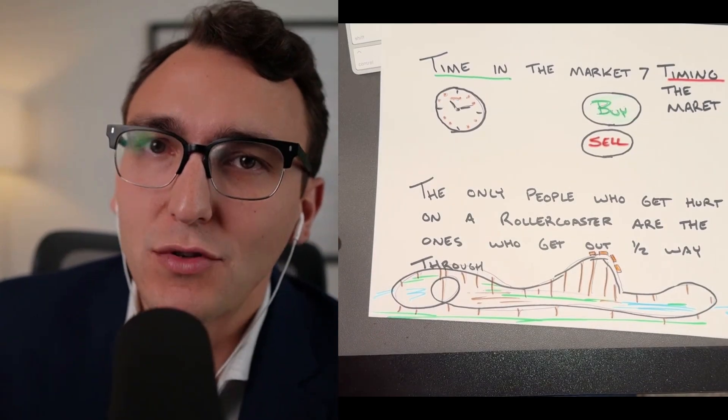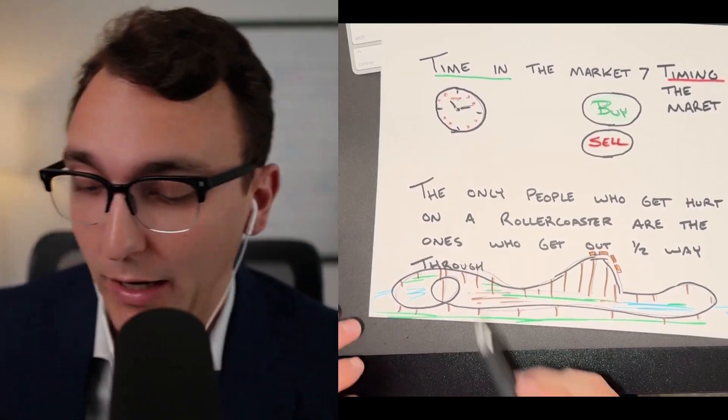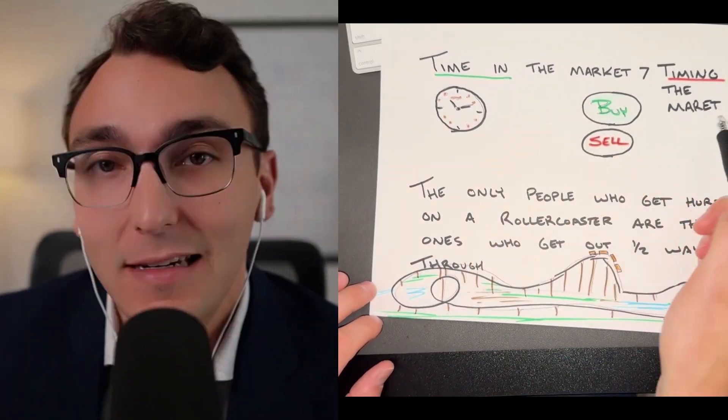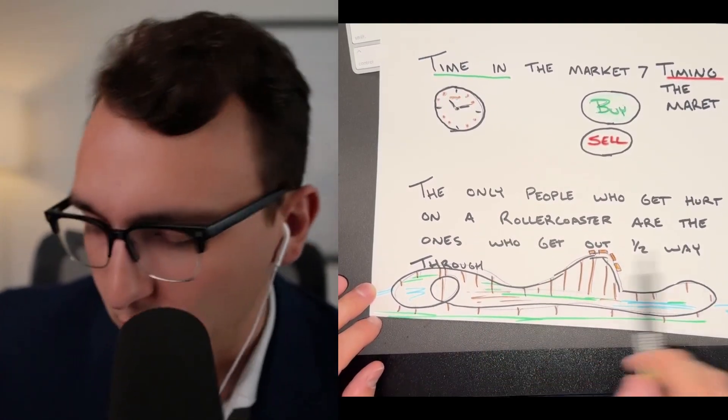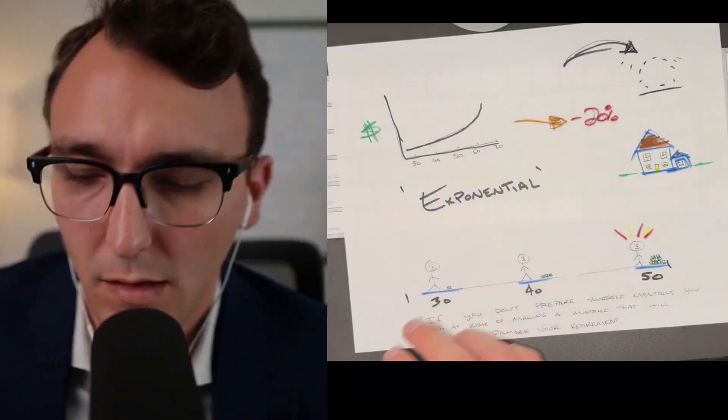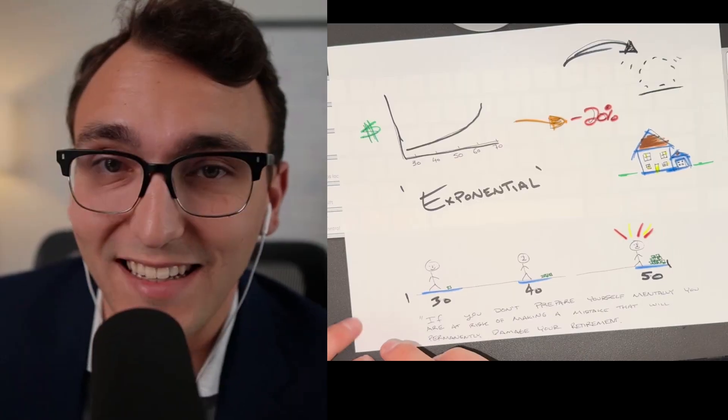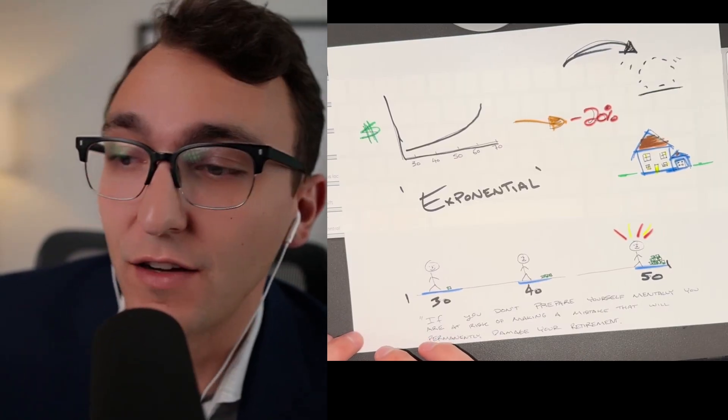But here's the problem. Everyone knows the right things to say when it comes to the stock market. Time in the market beats timing the market. The only people who get hurt on a roller coaster are the ones who jump off halfway through. We all kind of know just to say that. So it's really easy to say those trite sayings to live through it is a different thing entirely.